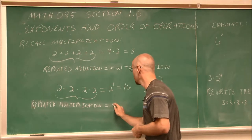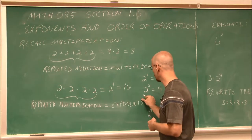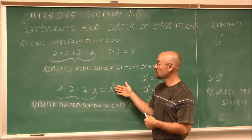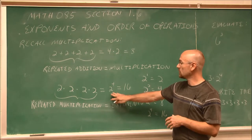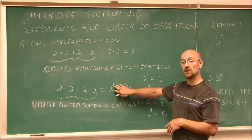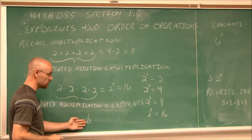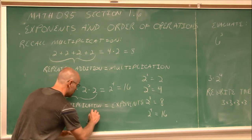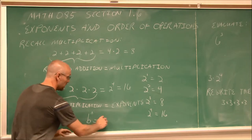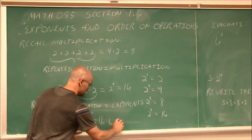So repeated multiplication equals exponents — we can rewrite it in a simpler, less time-consuming form. The base is the number being multiplied, and the exponent is this value here. We write b as the base, because this could be any number, and put it to some power n. We call exponents powers. This represents the repeated multiplication of the base n times.